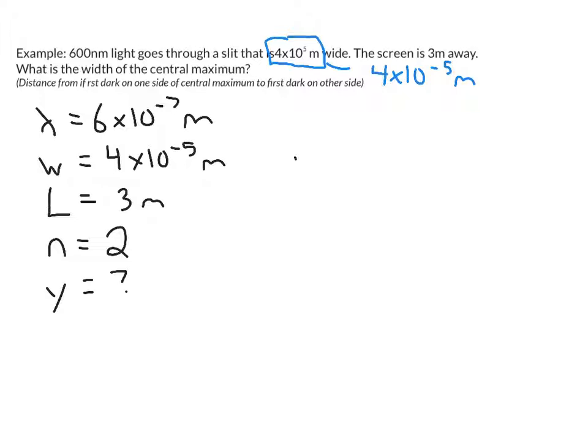If we plug in our numbers, w y over L equals n lambda. The w we know, we don't know the y, the L was 3, and that's equal to 2 times our lambda.